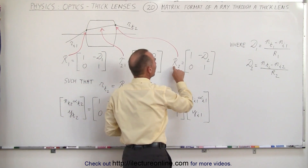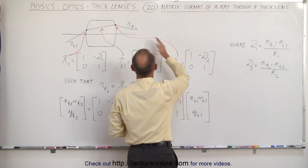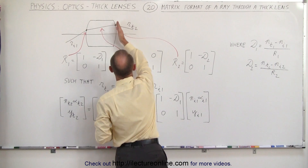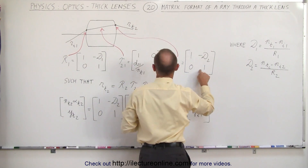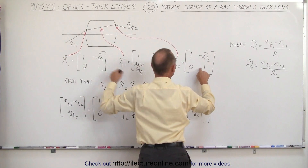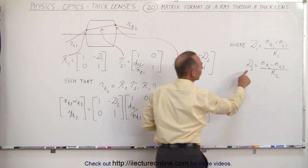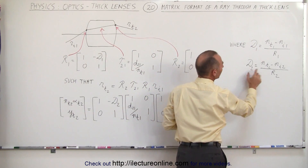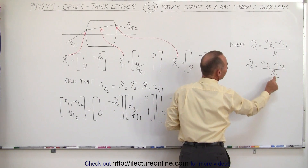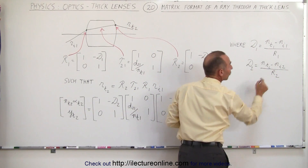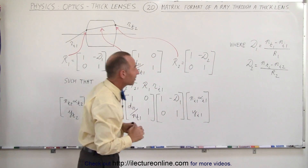R2, the refractive matrix of the back side of the lens when we cross the back boundary, again has the 1, 0, 1 structure just like before, along with a minus D2. D2 is the difference of indices of refraction divided by the radius of curvature of the back side of the lens.